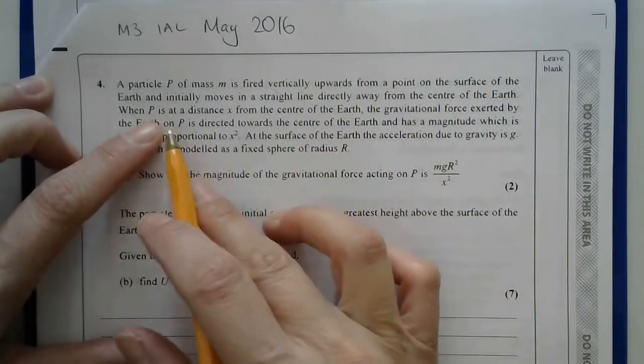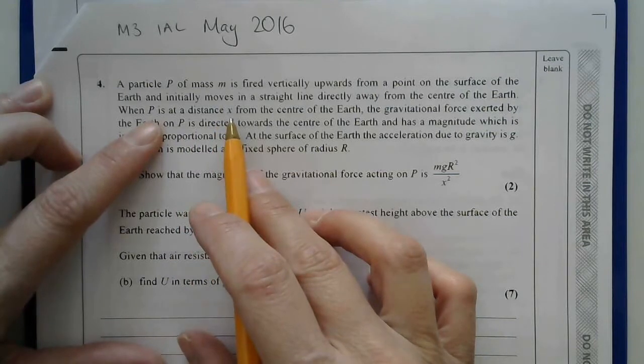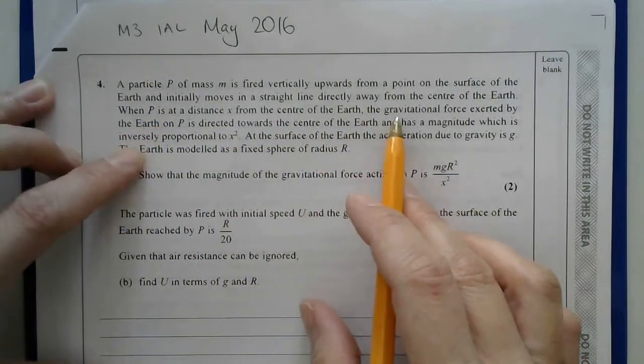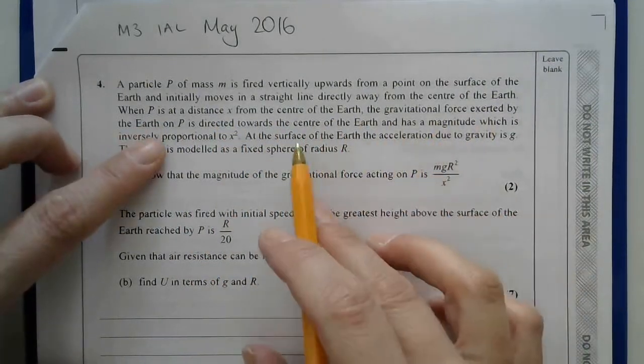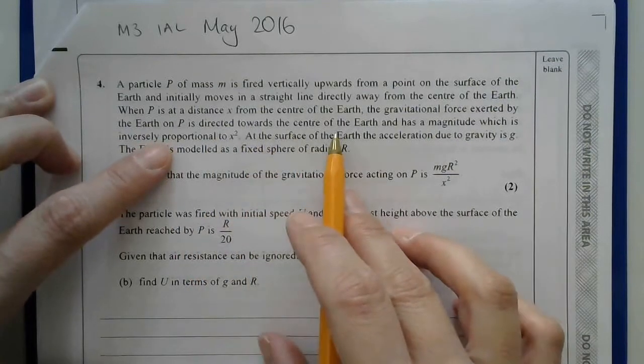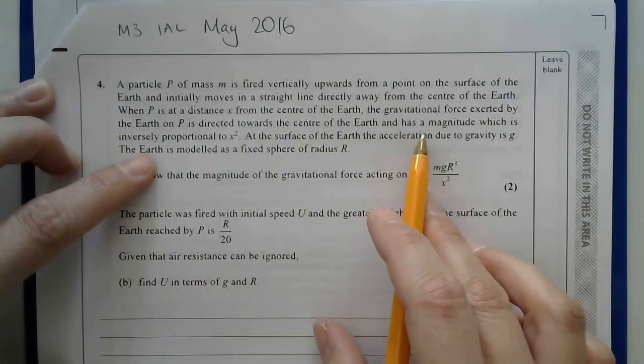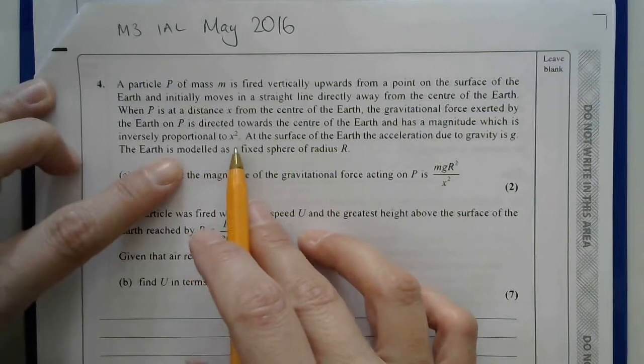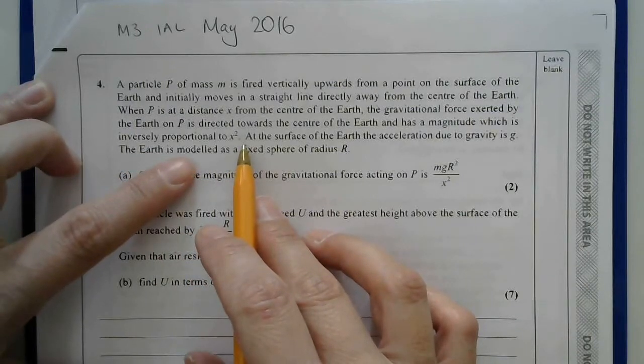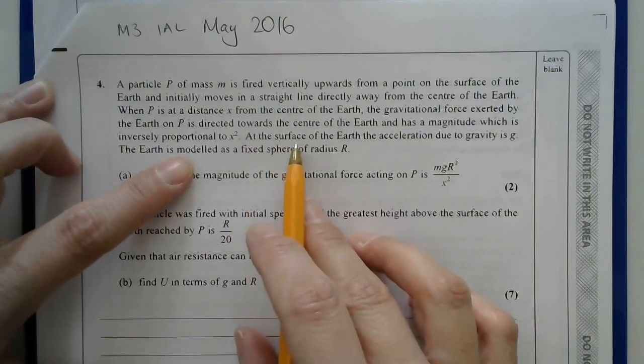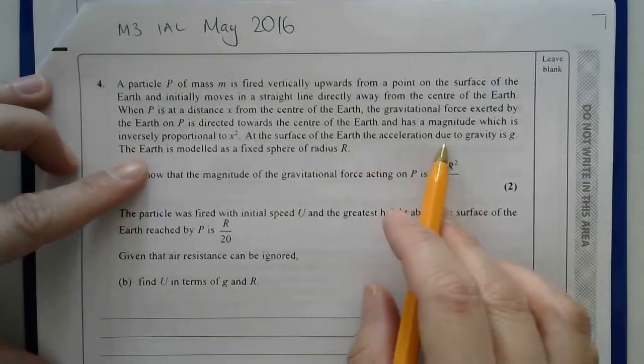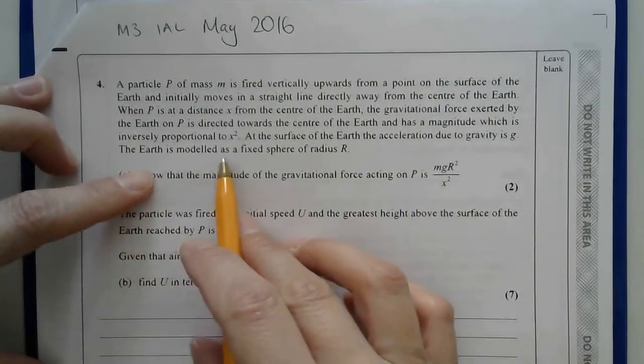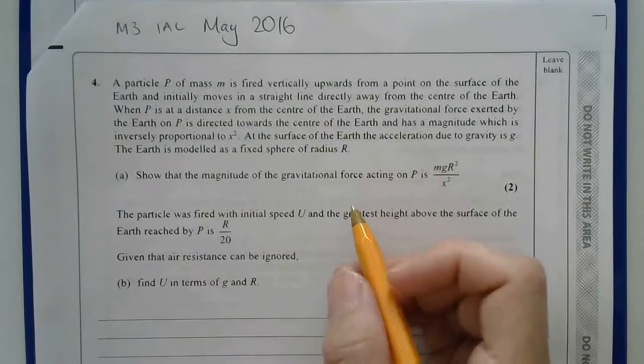Initially moves in a straight line directly away from the centre of the Earth. When P, the particle, is at a distance x from the centre of the Earth, the gravitational force exerted by the Earth on P is directed towards the centre of the Earth and has a magnitude which is inversely proportional to x-squared. At the surface of the Earth, the acceleration due to gravity is g, the Earth is modelled as a fixed sphere of radius r.